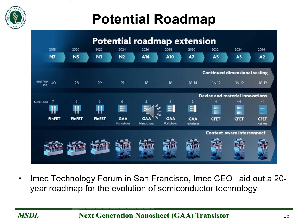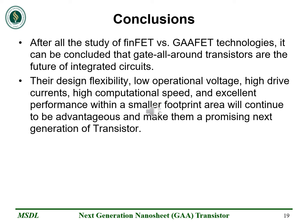Let's continue with the potential roadmap. This slide shows a 20-year evolution roadmap of semiconductor technology laid out by IMEC's CEO during the IMEC Technology Forum in San Francisco. This roadmap plans to go beyond the nano-scale with nano-sheet and Forksheet. After studying FinFET and GAAFET technology, it can be concluded that Gate-All-Around transistors are the future of integrated circuits. Design flexibility and excellent performance within a smaller footprint area will continue to make them a very promising next generation of transistor.